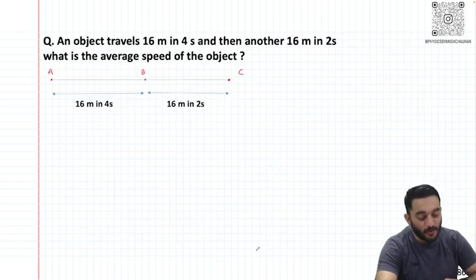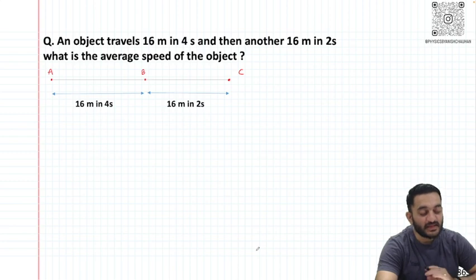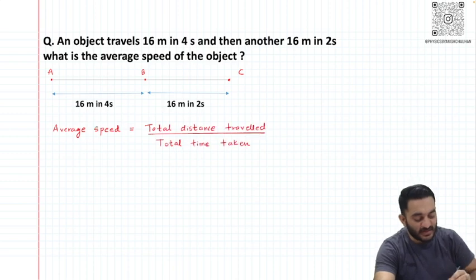One more example: an object travels 16 meters in 4 seconds and then another 16 meters in 2 seconds. What is the average speed of the object?